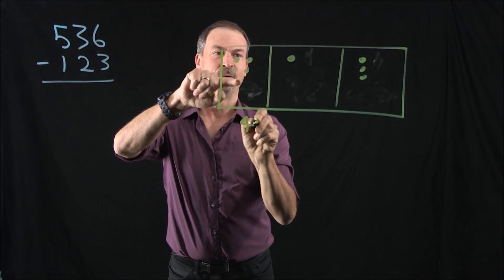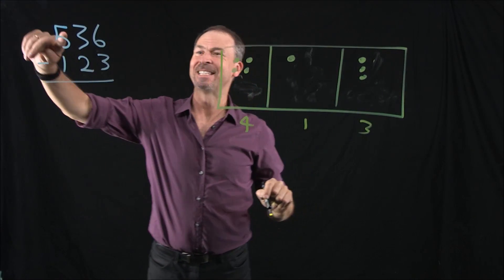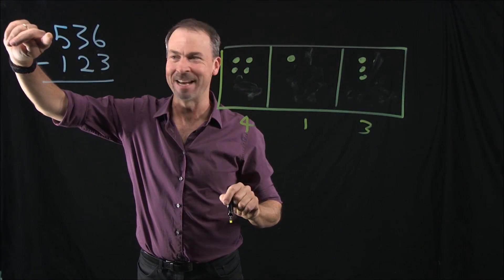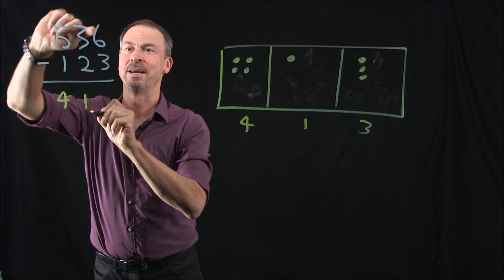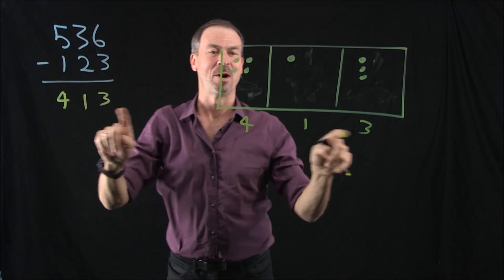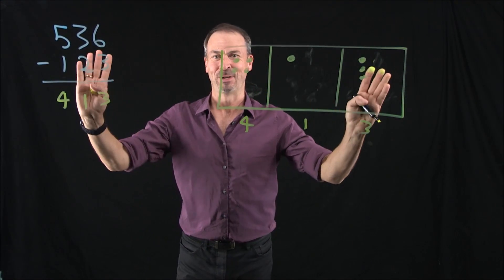And what am I left with? 4, 1, 3. In fact, I look at this answer, it's kind of as though I just went from left to right again, because I like left to right. 5 take away 1 is 4, 3 take away 2 is 1, 6 take away 3 is 3. 4, 1, 3. 4 hundreds, 1 ten, and 3. Beautiful. Absolutely stunning.